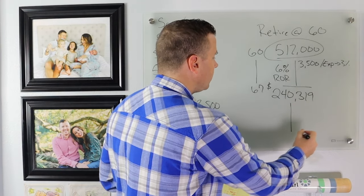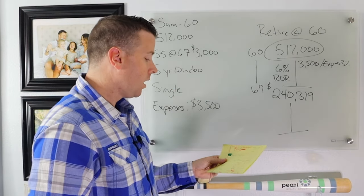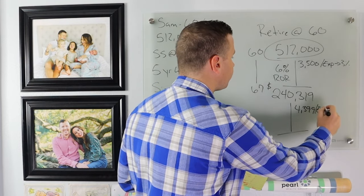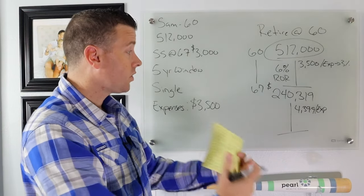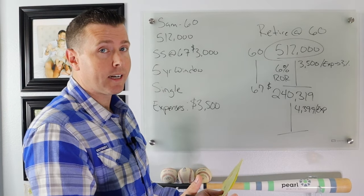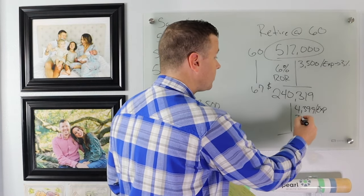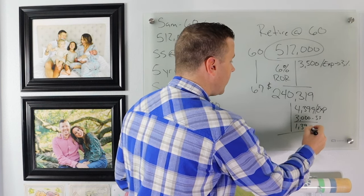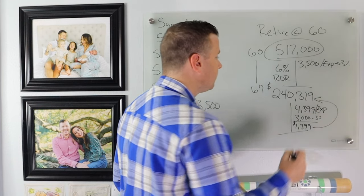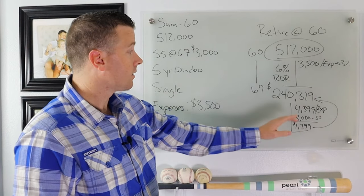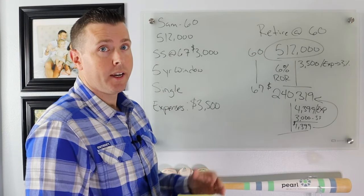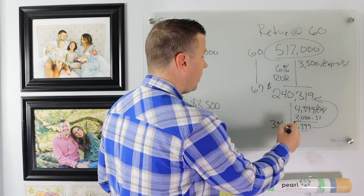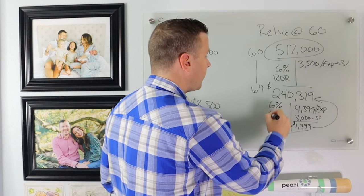Now $240,319 is what we've got at 67. Our expenses because of inflation have gone to $4,399. So that's our new expenses. Our Social Security is going to start kicking in now. So we've got $4,399 in expenses. Our Social Security is $3,000. So there's our Social Security, which means we need $1,399 coming out of this $240,000. So we need $1,400 a month out of this $240,000 in order to live. That's going to get a 3% inflation rate, and we're still going to have a 6% rate of return.